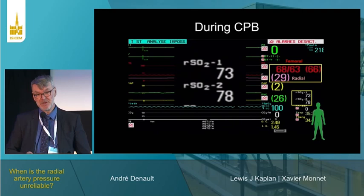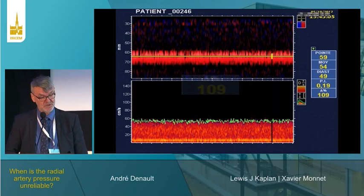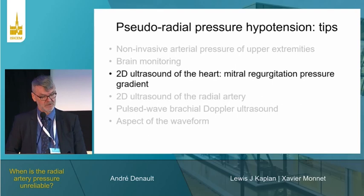This patient also had transcranial Doppler, and the value was completely normal. So definitively, this was unreliable radial artery pressure monitoring.